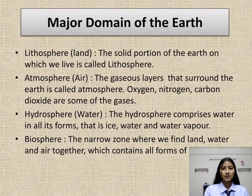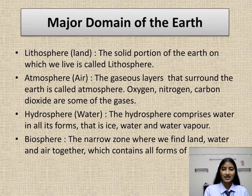The solid portion of the earth we live in is called the lithosphere. The gaseous layers that surround the earth are called the atmosphere. The hydrosphere comprises water in all its forms — that is ice, water, and water vapor. When we combine all three — lithosphere, atmosphere, and hydrosphere — that is called the biosphere.